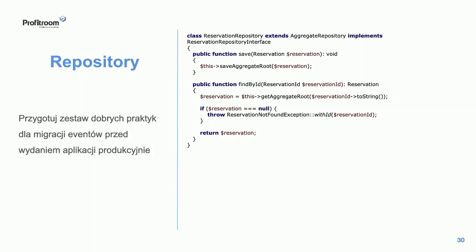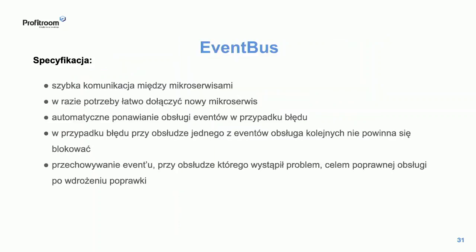Mamy opisaną domenę, mamy eventy – możemy przejść do event busa. Budując event busa, mieliśmy dokładnie takie same wymagania jak do command busa, i jeszcze kilka dodatkowych. Chcieliśmy, żeby łatwo było się do niego podłączyć – w każdej chwili móc dodać nowy serwis i szybko go skonfigurować. Chcieliśmy, żeby komunikacja między serwisami była prawie natychmiastowa. W przypadku błędu event bus nie powinien być blokowany – stąd dead letter queue. Eventy odkładamy na potrzeby debugowania.